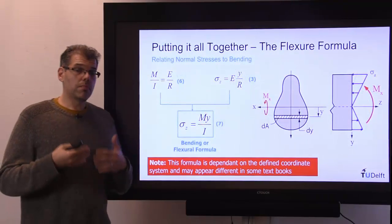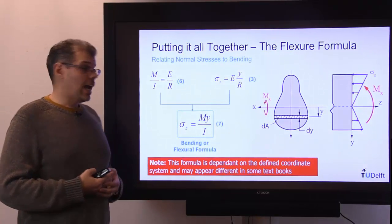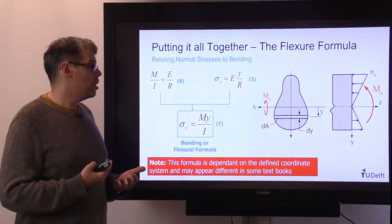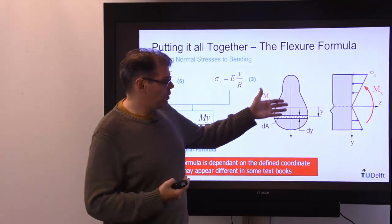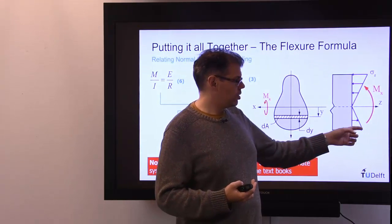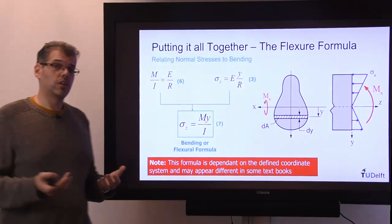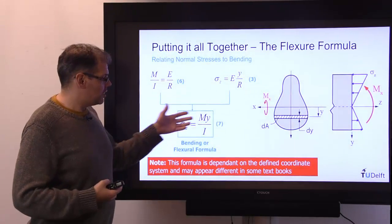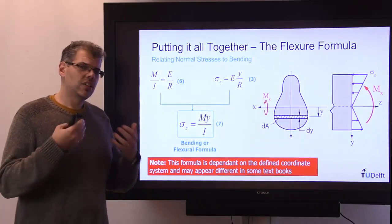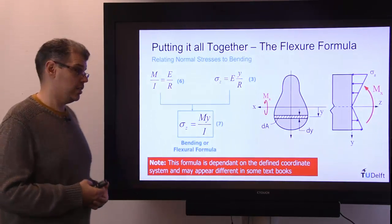Now I just want to remind you about our discussion we had earlier about coordinate systems and the fact that this definition is dependent upon the coordinate system you use. Obviously if we define y as positive downwards, and we have a moment as shown here, we'll get a positive normal stress for a positive y. In some textbooks they define the coordinate system differently, and this formula may be having a negative sign in it, so you need to be careful about being consistent with your coordinates and the formulas that apply for that coordinate system.